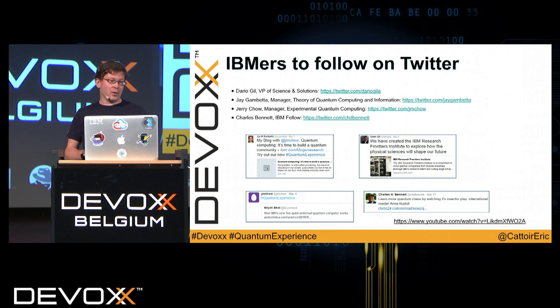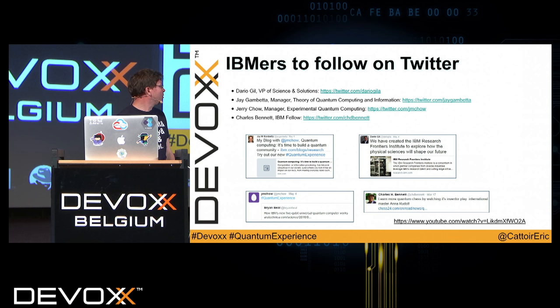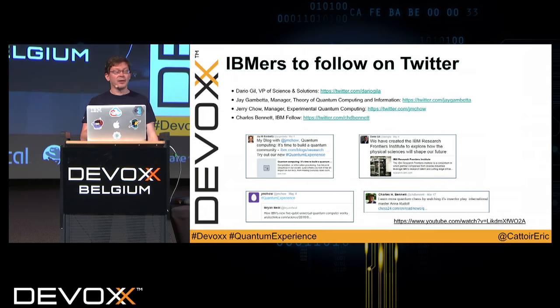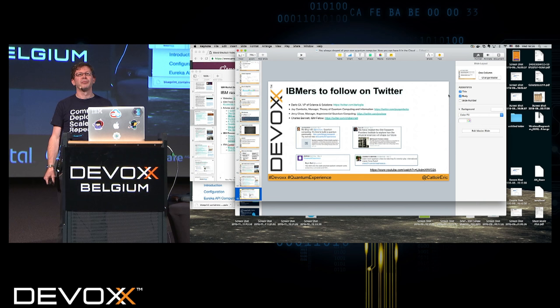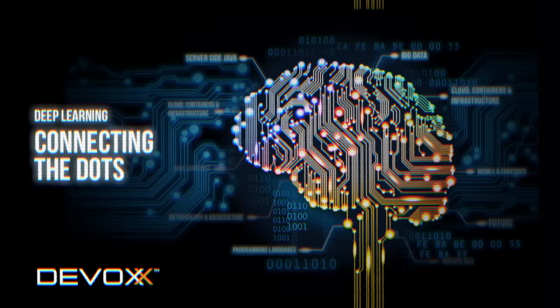There are also IBM researchers you can follow on Twitter who post all kinds of interesting things — for example, an experiment about quantum chess, where chess pieces can be in multiple places at the same time. The purpose is to explain these very abstract things in engaging ways. I hope this talk gave you a feeling of what quantum computing is and what you can start to do with it. I'll still be around at the conference, and you have all the reference information to find more.